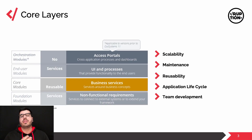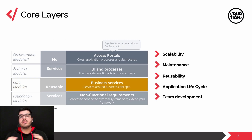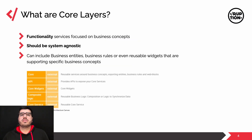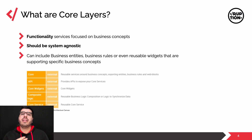The most abstract way to think about the core layer is just business services. These are services that are built around business concepts, and everything in this layer is going to be built or thought about around those business concepts. Core layers are functionality-driven services focused on business concepts. They should be system agnostic and can include some business entities, business rules, or even reusable widgets that support specific business concepts.